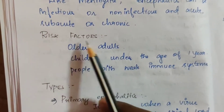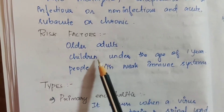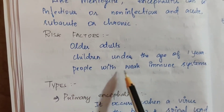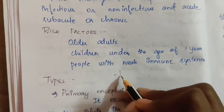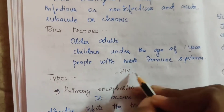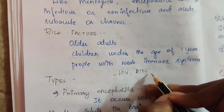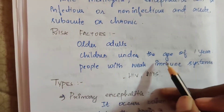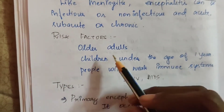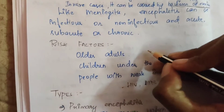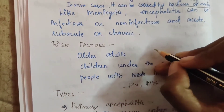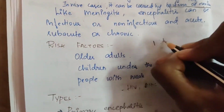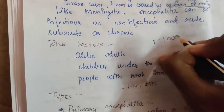Risk factors include older adults, children under the age of one year, and people with a weak immune system such as those with HIV or AIDS, where the immune system is lower and infection can easily affect them. The incidence rate is 1 in 1000.